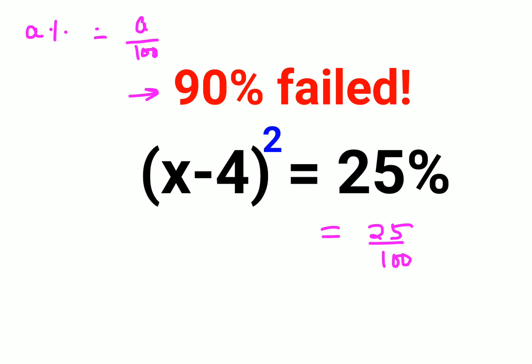Now understand, if you had a variable which equals 25 upon 100, in order to find the value of x, that would be taking square root on both sides. So square root of 25 upon 100.